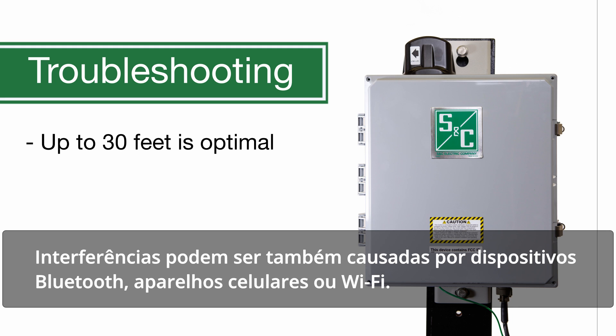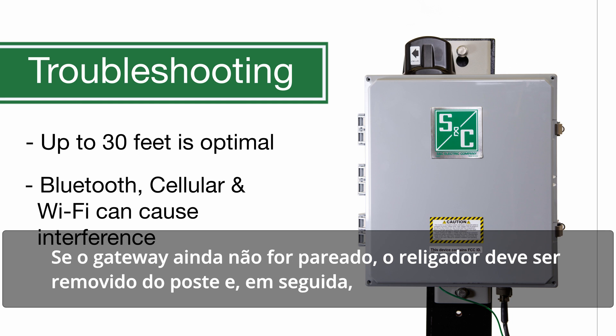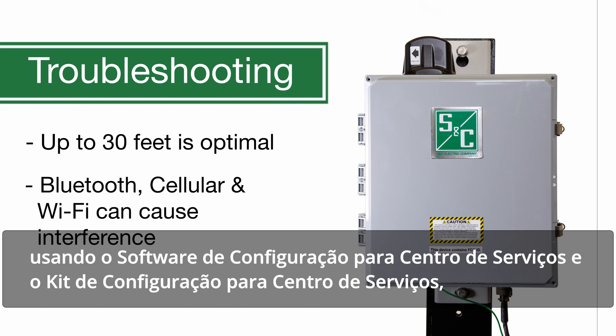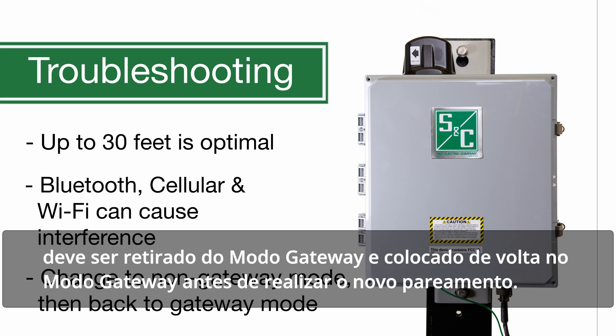Heavy use of Bluetooth devices, cellular devices, or Wi-Fi can cause interference. If the gateway still does not pair, the recloser should be removed from the pole. Then, using the Service Center Configuration Software and Service Center Configuration Kit, take it out of gateway mode and put it back into gateway mode before pairing again.